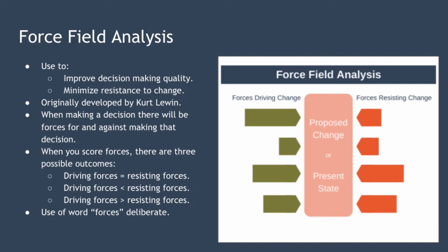When using the model, you score all the forces to see if the driving forces outweigh the resisting forces, and there are three possible outcomes. The first is that driving forces equal resisting forces. An equilibrium will exist because you have a balance of counteracting forces. In this situation, change won't be possible and the status quo will remain.